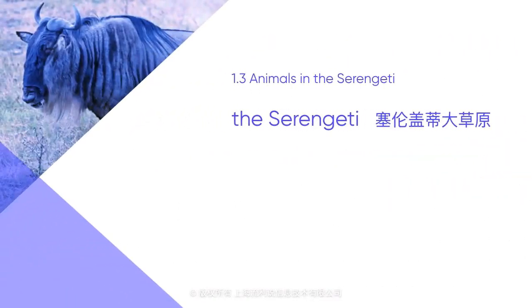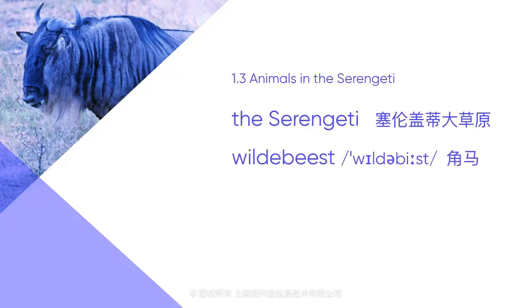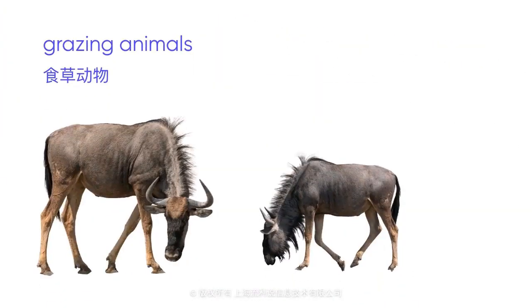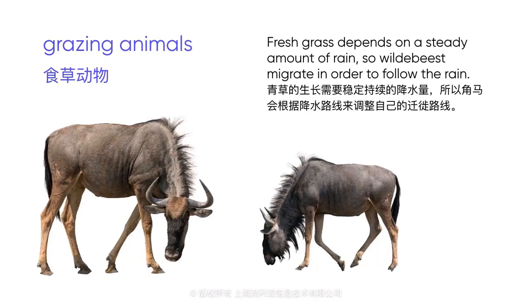Birds and salmon are not the only animals that migrate — mammals do too. In the Serengeti region in Africa, we can witness one of the largest mammal migrations in the world. The Serengeti is home to diverse species such as lions, zebras, and an animal called wildebeest. Once a year, three million wildebeest from the Serengeti migrate to find food and water. Wildebeest are grazing animals, which means they live on a diet of grass. But fresh grass depends on a steady amount of rain, so wildebeest migrate in order to follow the rain.